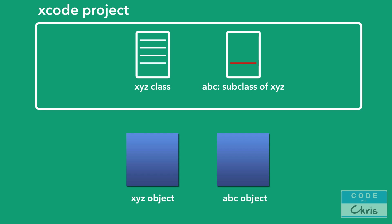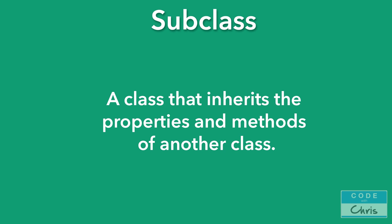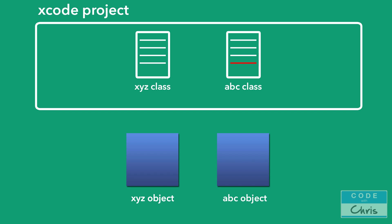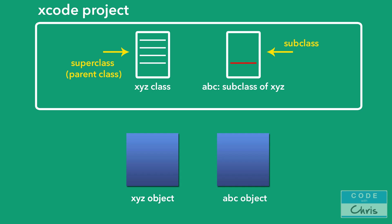In other object-oriented programming languages there's a concept called inheritance. In Objective-C and Swift it's known as subclassing. A subclass is a class that inherits the properties and methods of another class. So going back to our scenario with the two similar components, we can write one class to describe the behavior of the first component, then write a second class and declare it as a subclass of the initial class. The second class has all of the properties and methods from the first class without having to rewrite or redeclare them. Instead we just write code to represent the difference. In this relationship, the second class is the subclass and the first is the superclass — sometimes also called the parent class.